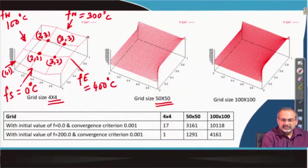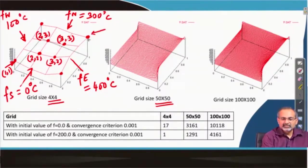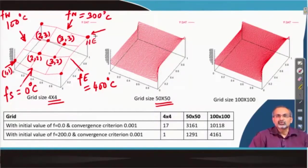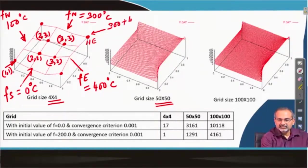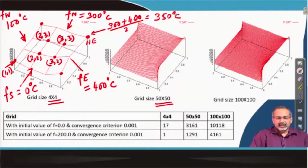One issue which still remains is at the corner points: what values of temperature should we set? Though in the computational stencil that will not have any influence, there should be reasonable ways to estimate those corner values. For example, at the northeast corner — sharing part of the northern and eastern face — you could estimate it by taking an arithmetic average of the values at the 4 boundaries, giving 350 degrees centigrade at that corner. Similarly this can be done at all other corner points.